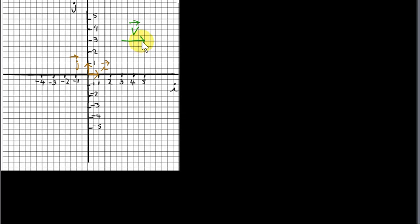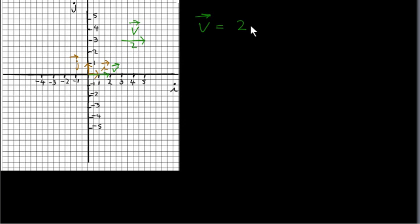Suppose we have this vector v, and we want to write it in terms of these two unit vectors i and j. This vector v is actually pointing to the right — it's a horizontal vector. Its magnitude is 2; you can see the distance from the tail is 2. What we do is move this vector down parallel to itself so its tail is at the origin. So now v is here, and we write it in terms of i and j. In this case, v is equal to 2 times vector i. If we take the unit vector i and multiply it by 2, its length goes from 1 to 2. Multiplying by a scalar doesn't change the direction; it just doubles the length of the vector. So vector v is equal to 2i.